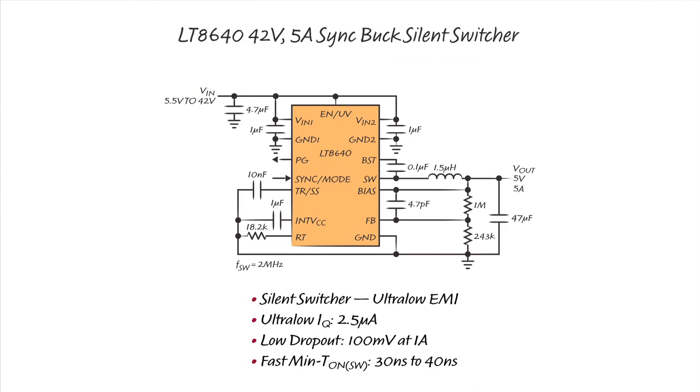The LT8640 features an ultra-low quiescent current of 2.5 microamps. This is the total supply current consumed by the device with no load in full regulation. This is particularly important for always-on systems.